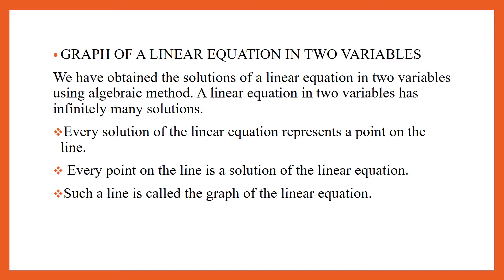If we plot the solutions of a linear equation in two variables on a graph paper, we find that each solution represents a point. Let us take any two points P and Q representing two distinct solutions and draw a line passing through them. We shall find that the points representing various solutions lie on the line passing through P and Q. Thus, we find that a linear equation in two variables is geometrically represented by a line, such that every solution of a linear equation represents a point on the line.